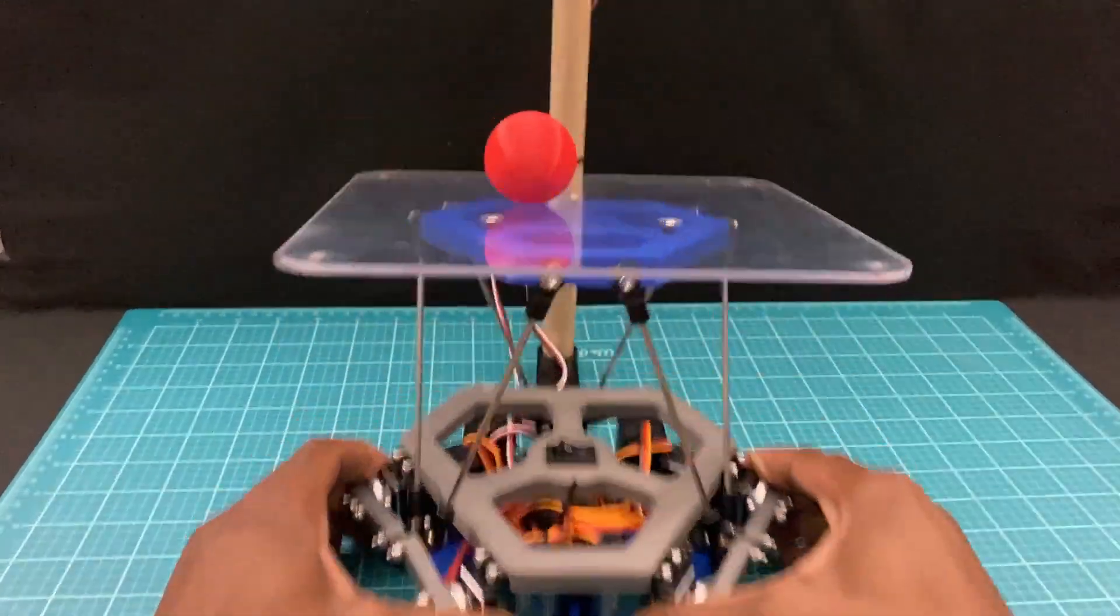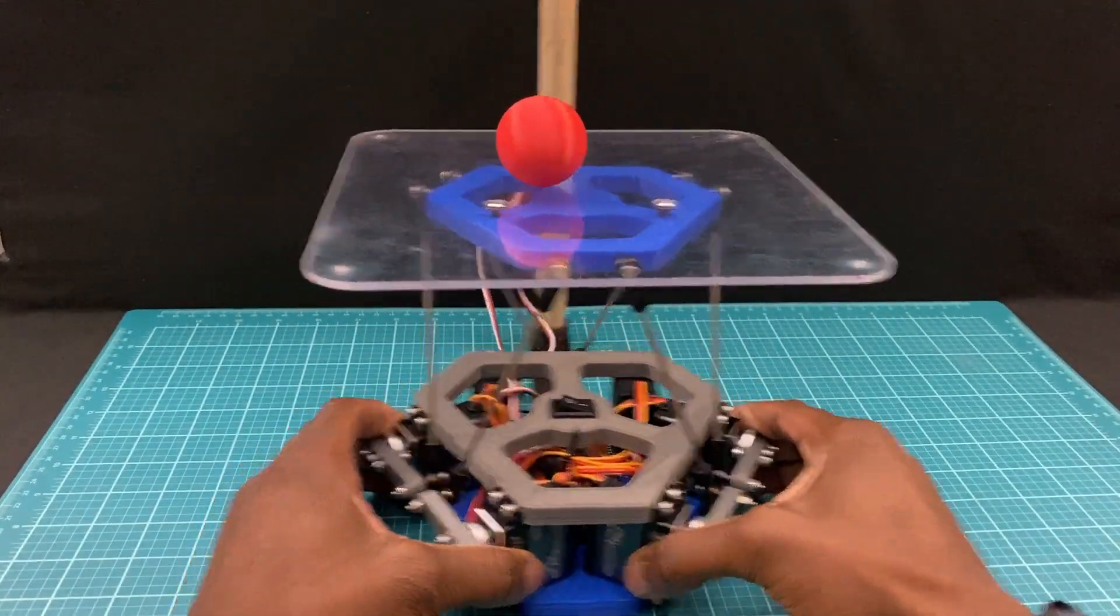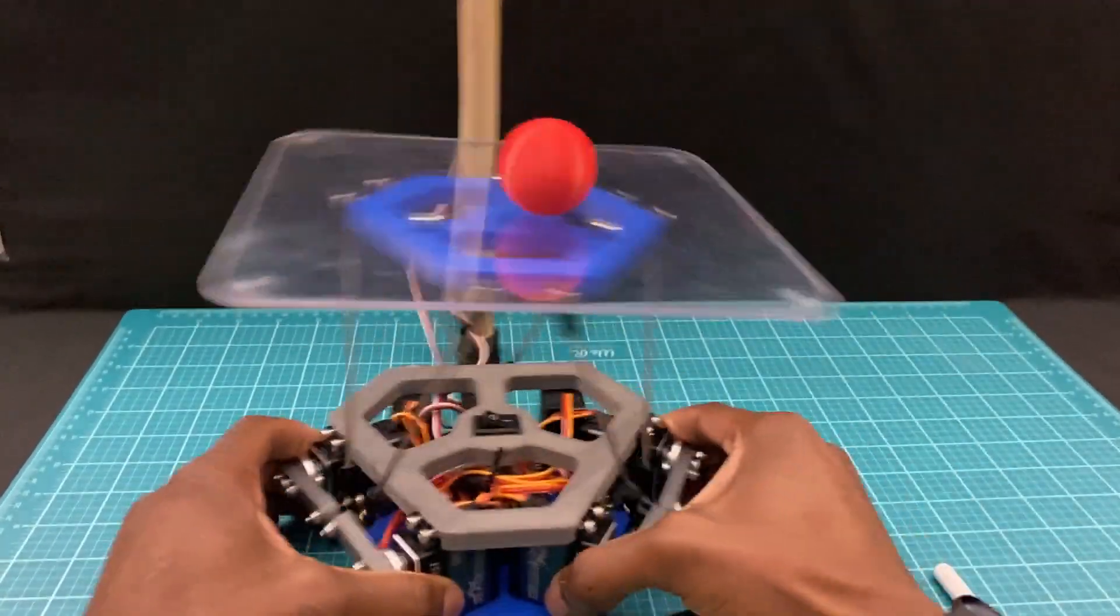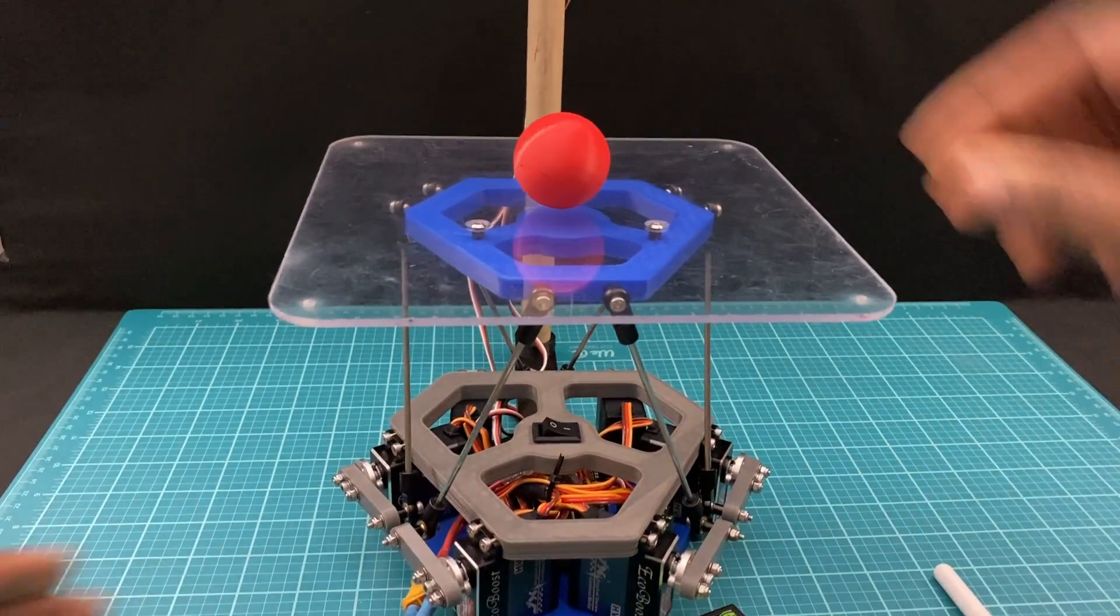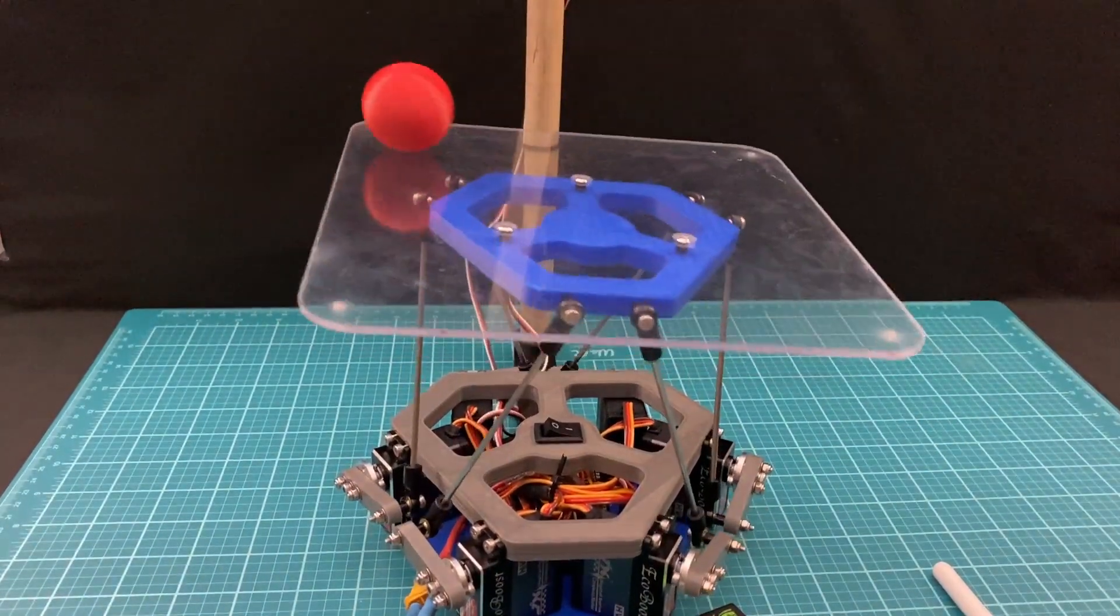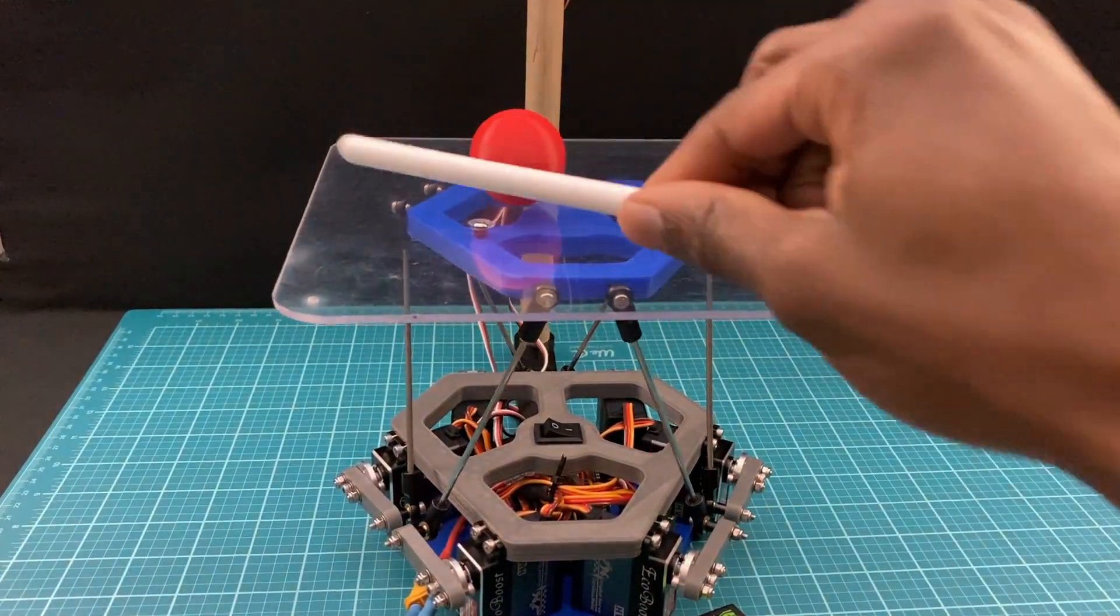In my previous video, I showed how I made this ball balancing robot. As discussed, the robot is able to balance this ball by using a PID algorithm. In this video, I'll discuss more about this PID algorithm and how it's tuned.